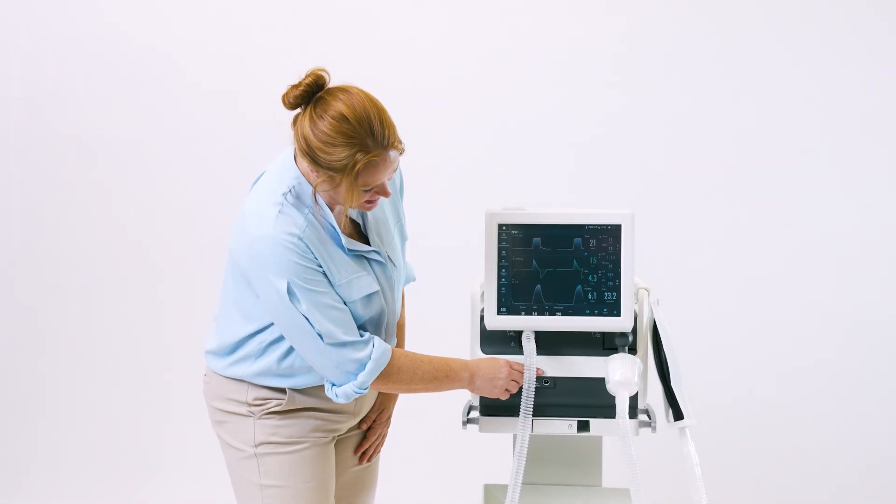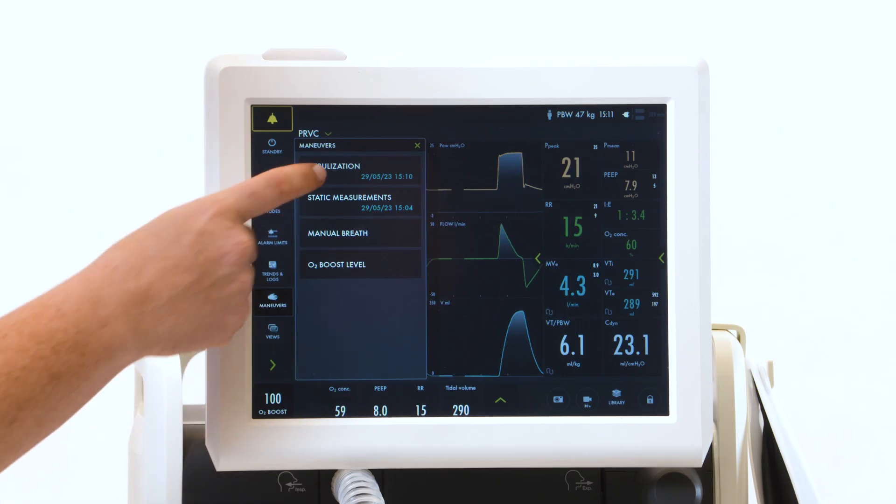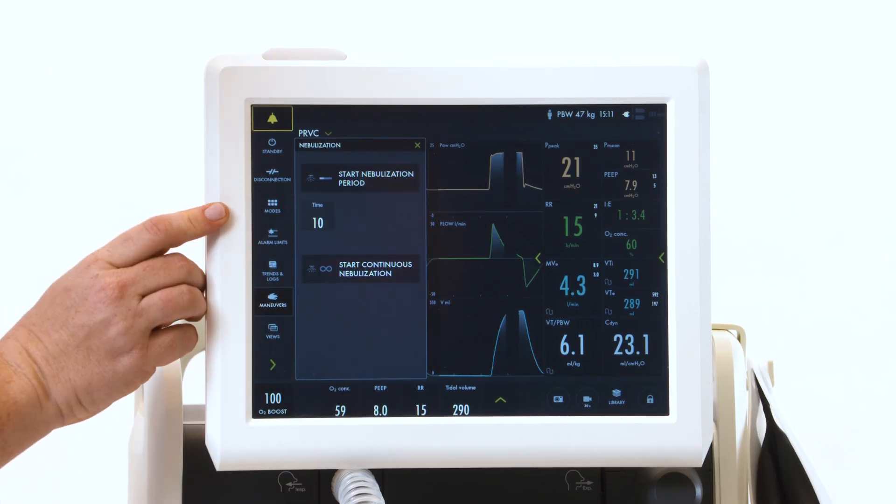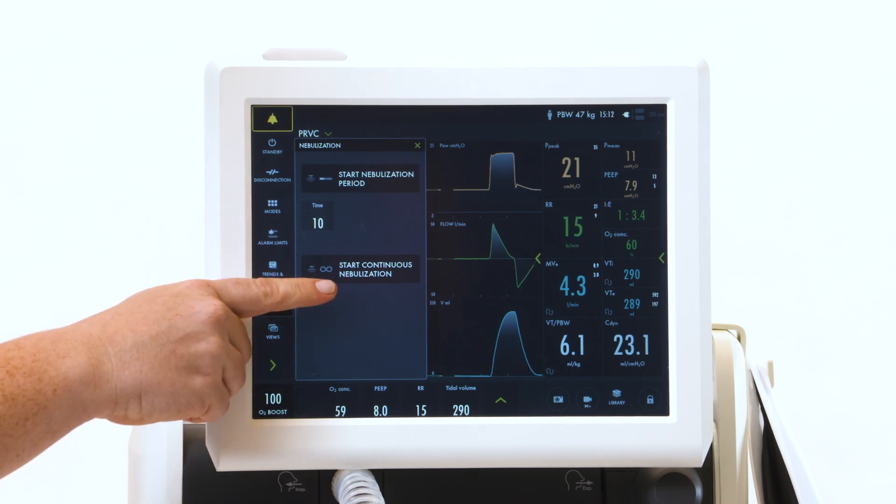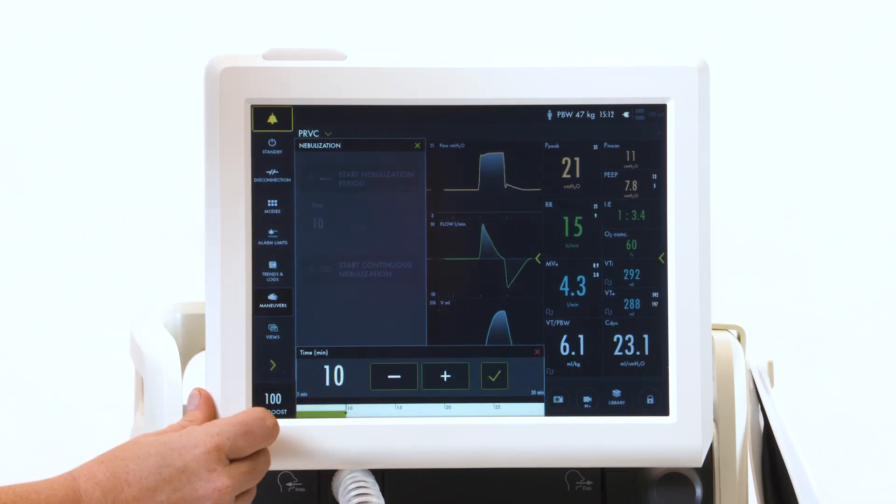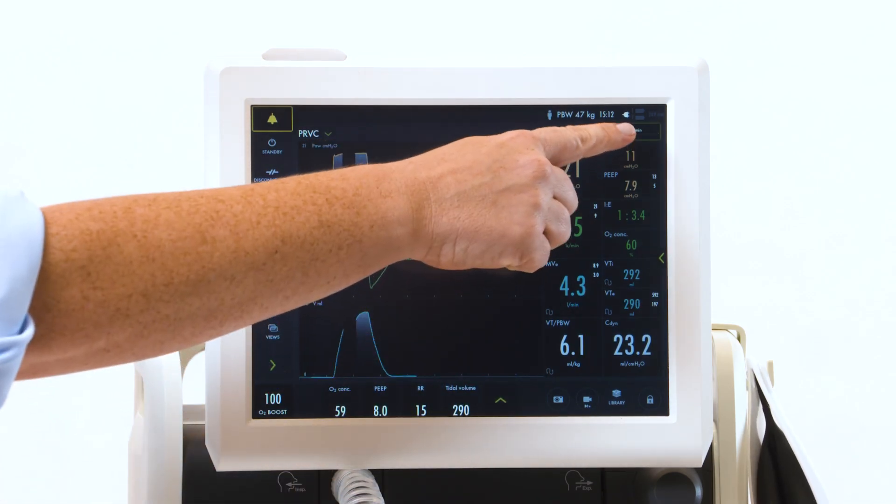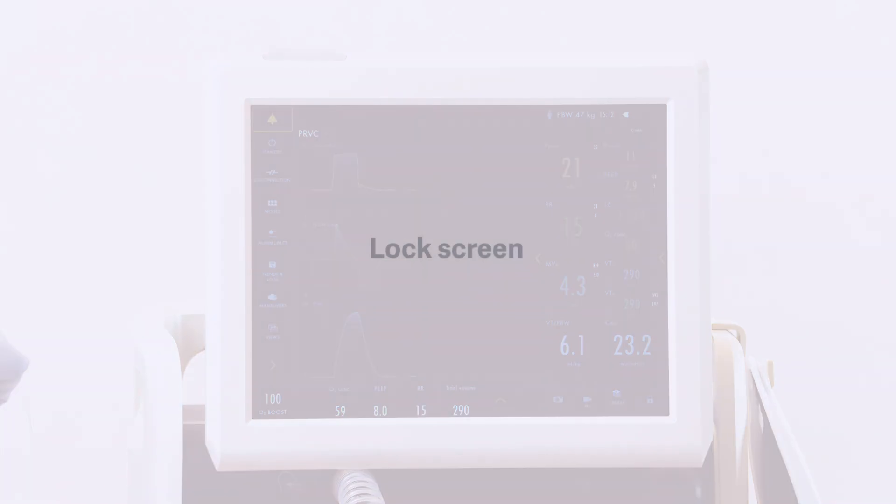AeroGen technology is built into every single ventilator and is connected at the bottom. Select the maneuvers tab and go to nebulization. You can run it continuously or intermittently choosing between 5 and 30 minutes. Check mark and hit accept and you'll see the nebulization appear.